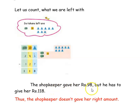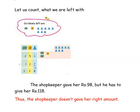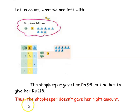So, the shopkeeper gave her rupees 98. But he has to give her rupees 118, because we subtracted 127 from 245 — that is the amount given by her mother. She bought ghee for 127, so the actual balance she should receive is rupees 118. But the shopkeeper gave her rupees 98. Thus, the shopkeeper did not give her the right amount.